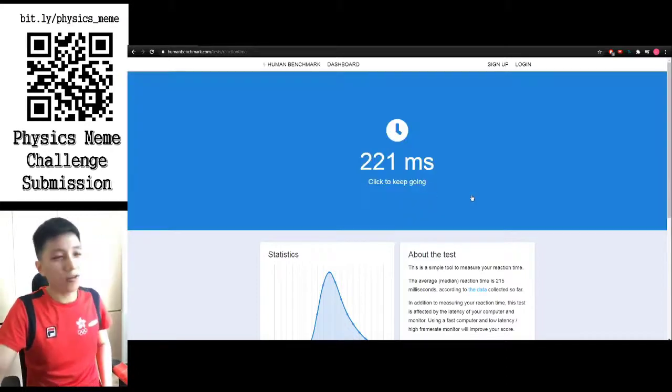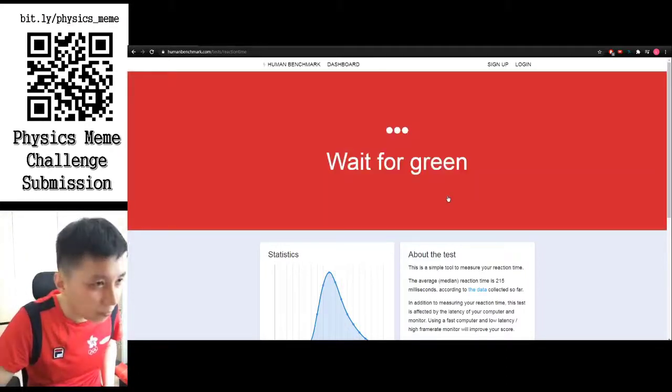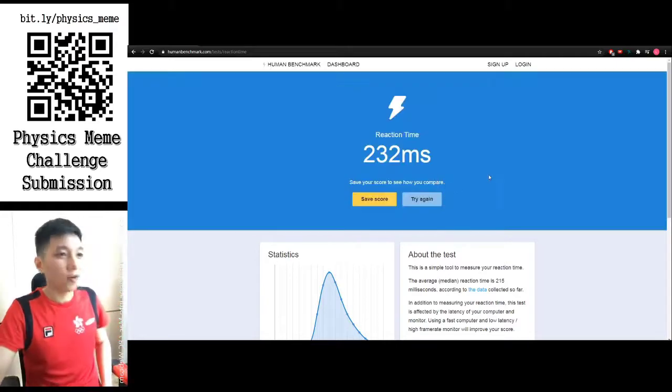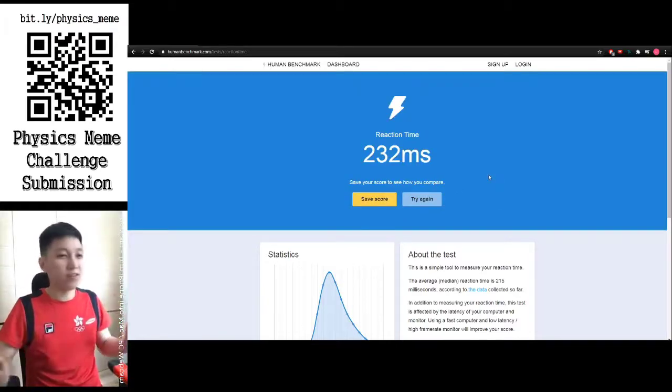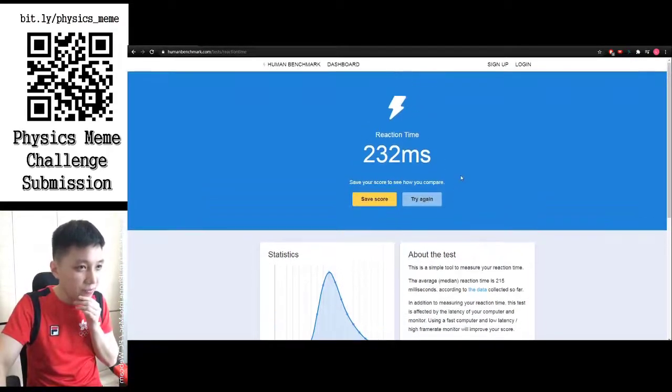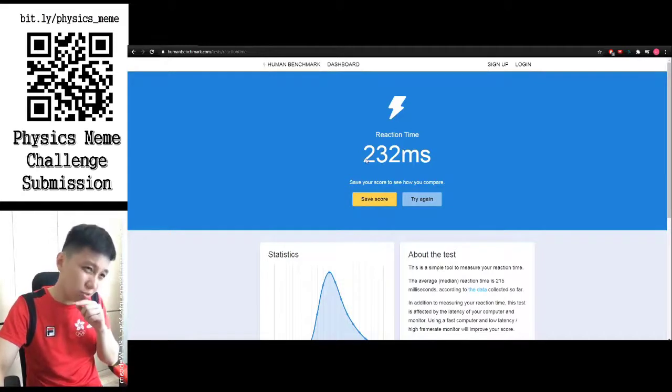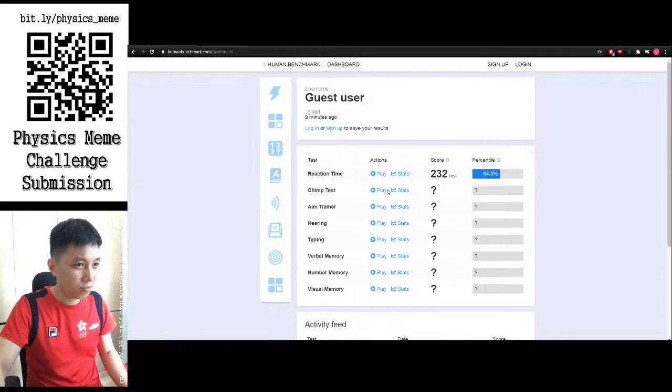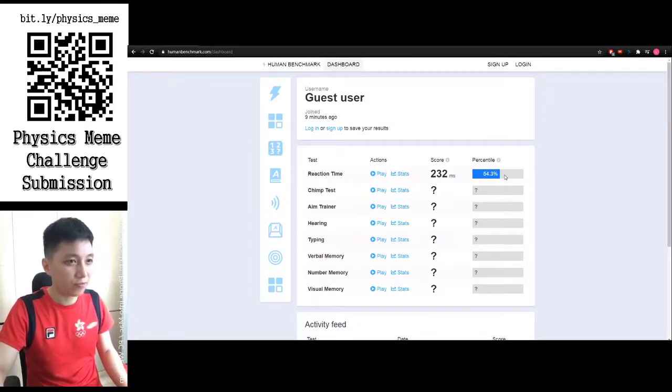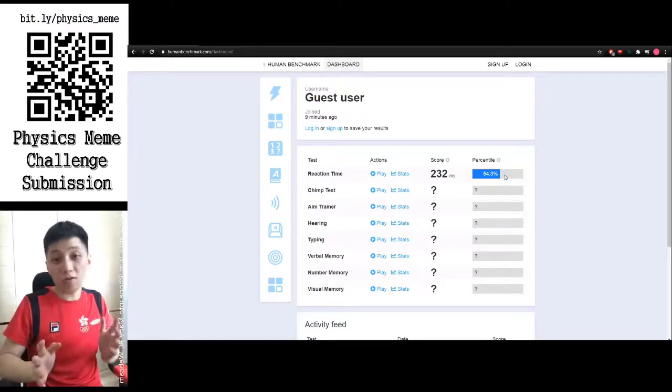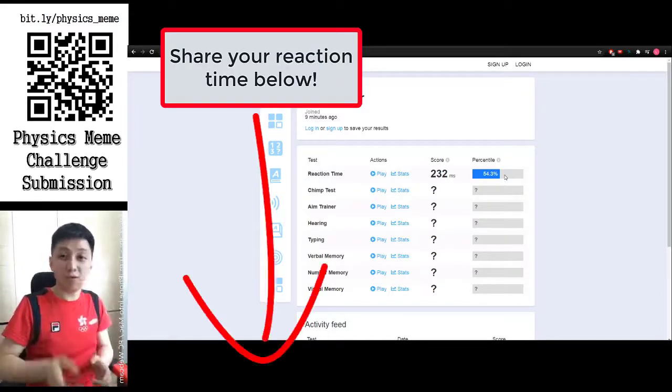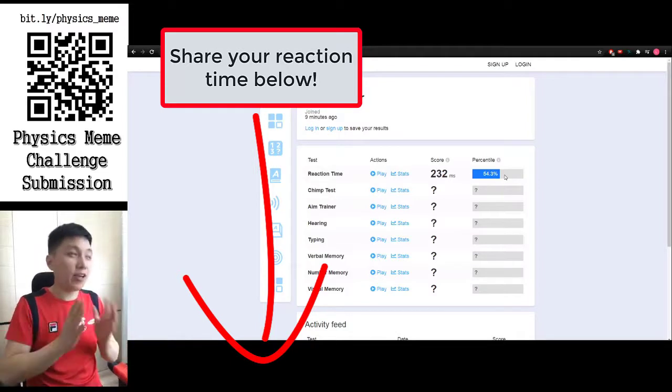This time is a bit slower. Last one. Okay, I think it's fair. I actually - I think they somehow changed the screen. I think this should be the average, 232 should be the average. Put down your reaction time in the comment section below. Try it out, really don't be shy.